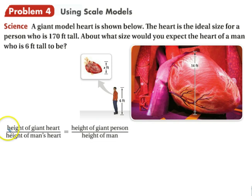So we're going to put the height of the giant heart over the height of the man's heart equal to the height of the giant person over the height of the man. The height of the giant heart is 14, the height of a man's heart is X, the height of the giant person is 170, and the height of the man is 6 feet.